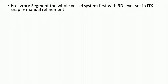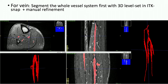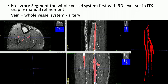As for vein, since the structure of vein is much more complicated than the artery, we decided to segment the whole vessel system first using 3D level set with ITK SNAP. We also did some manual refinement to correct the mistakes caused by this semi-automatic 3D level set algorithm. We then obtain the reference segmentation for vein by subtracting artery from the whole vessel system.